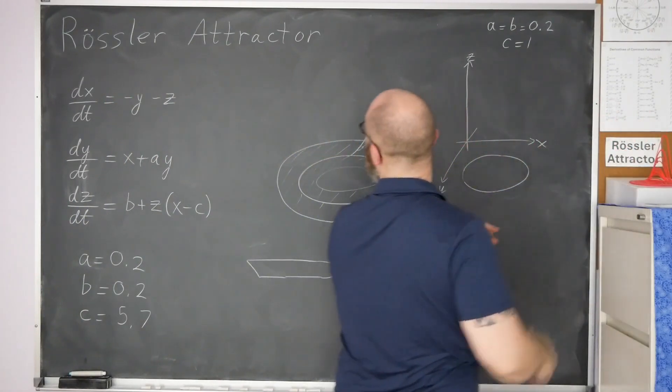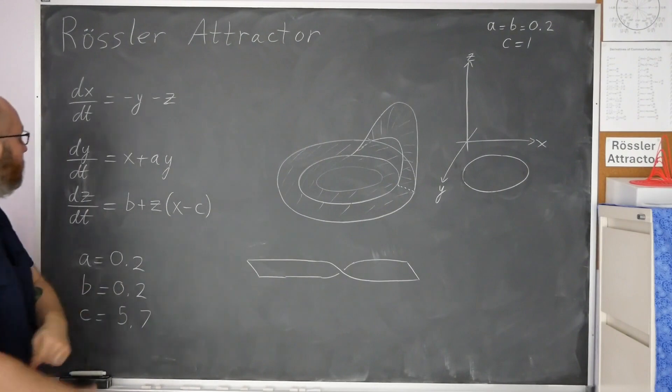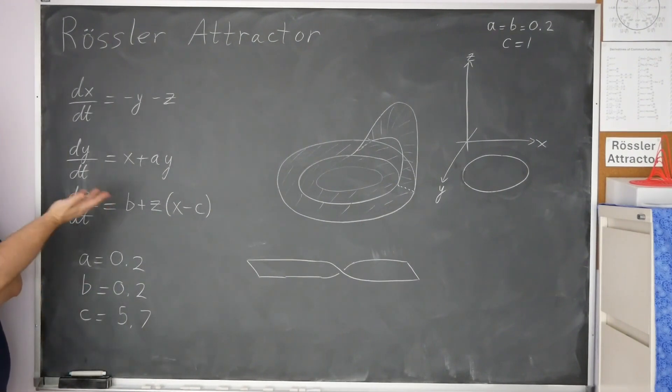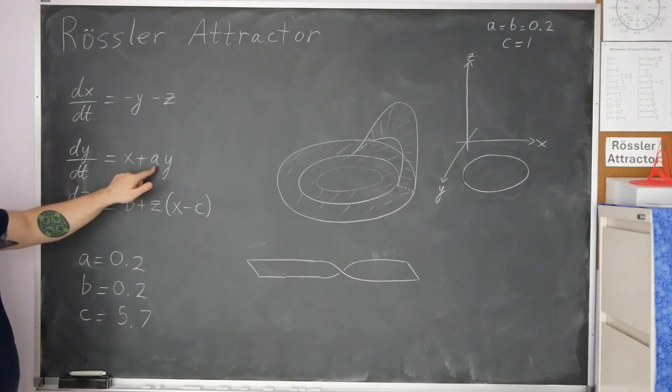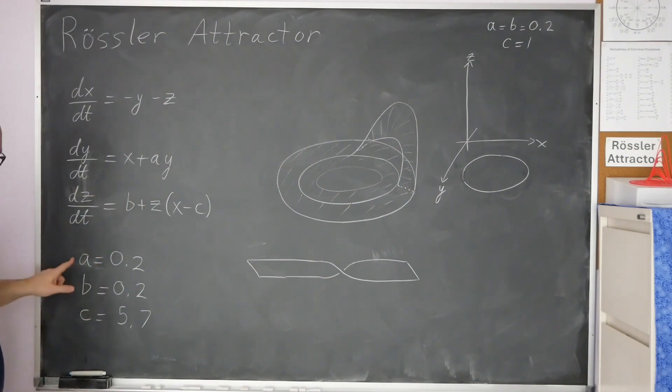So to answer that, first a little bit of background. The Rössler Attractor is just three coupled differential equations, and two of them are linear. So you have dx/dt equals negative y minus z, linear. dy/dt equals x plus ay, where a is a parameter. In the case of that little model, and then also the one that Rössler actually studied, a was 0.2, b was 0.2, and c was 5.7.